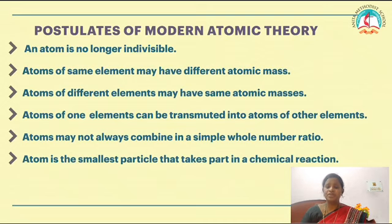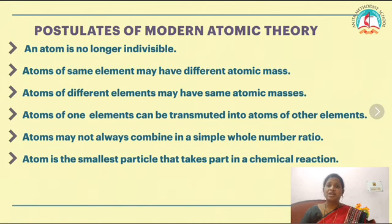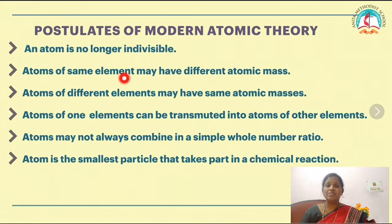The first lesson we are going to revise is atoms and molecules. The first thing is the postulates of modern atomic theory. According to modern atomic theory, atom is no longer indivisible — after the discovery of protons, electrons, and neutrons. Also, atoms of the same element may have different mass numbers; for example, isotopes have the same atomic number but different mass number.